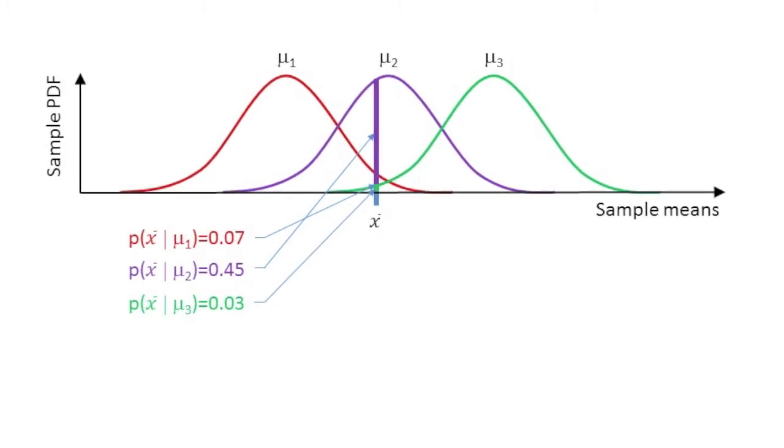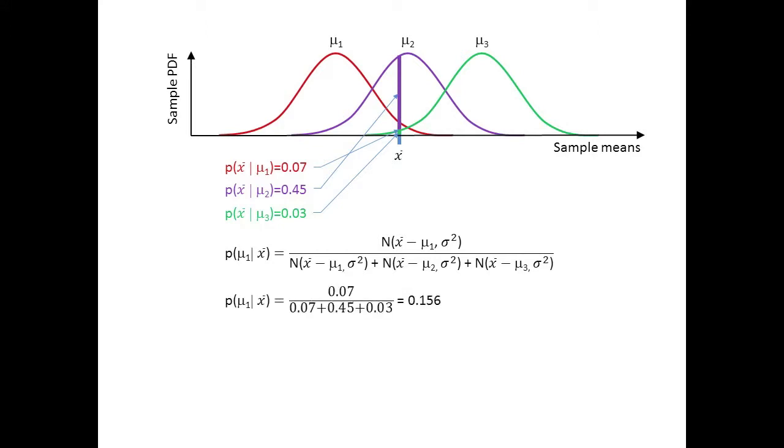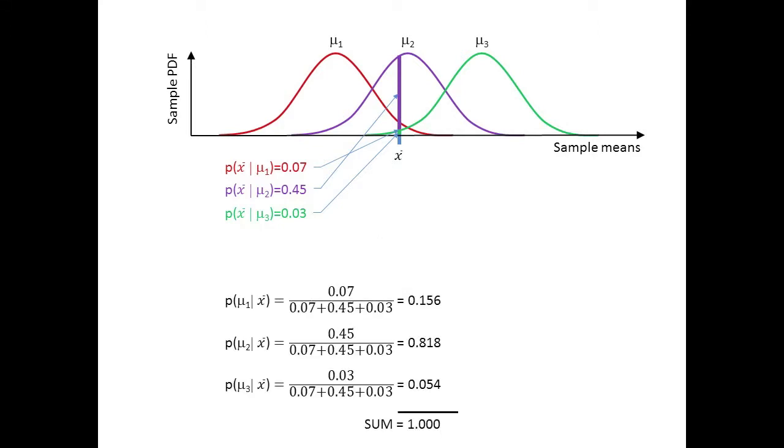Note that the conditional probabilities need not sum to 1. However, the probabilities of the sample having come from different source populations must sum to 1, since the event of obtaining a mean of value X̄ is a certainty. It has already happened.